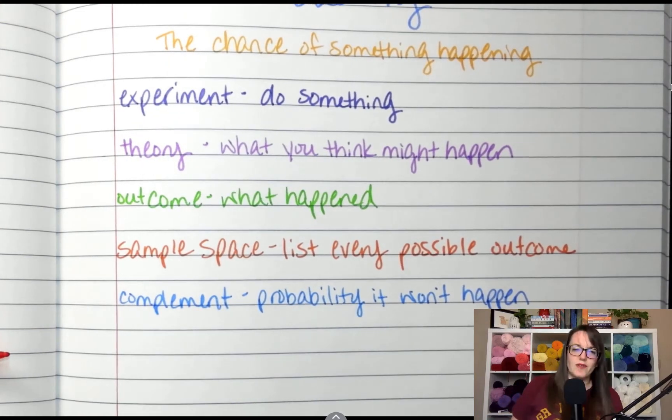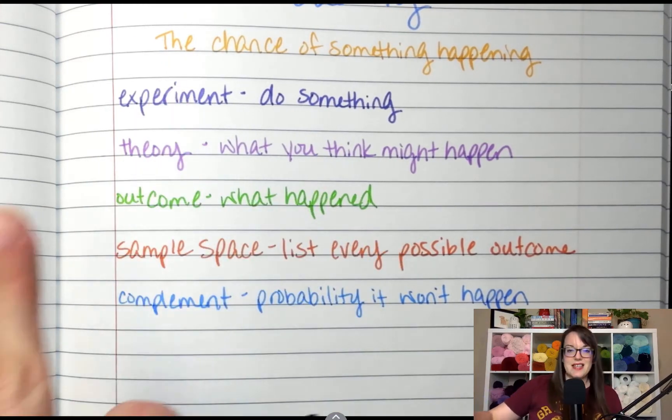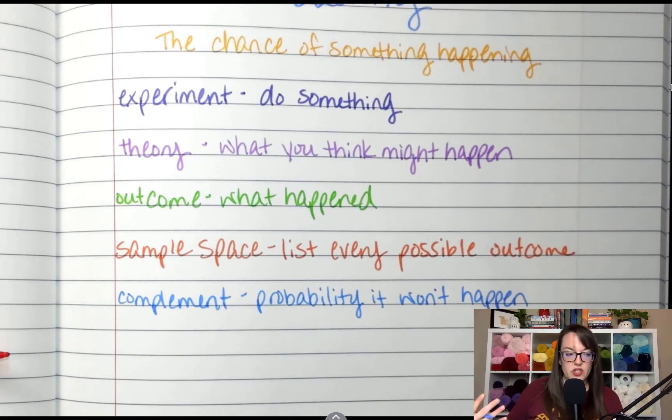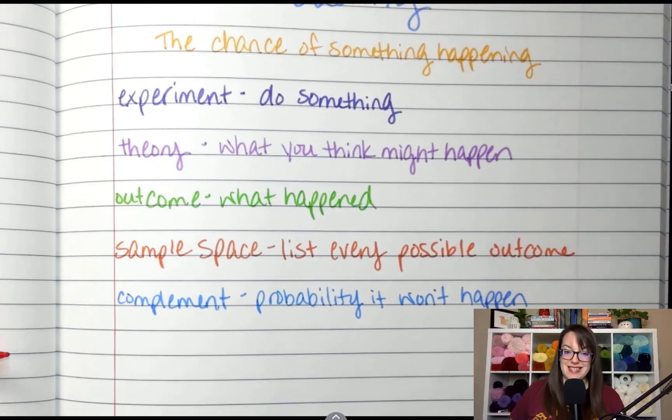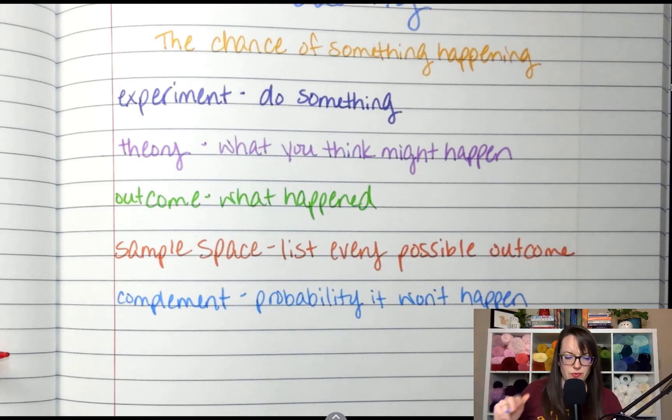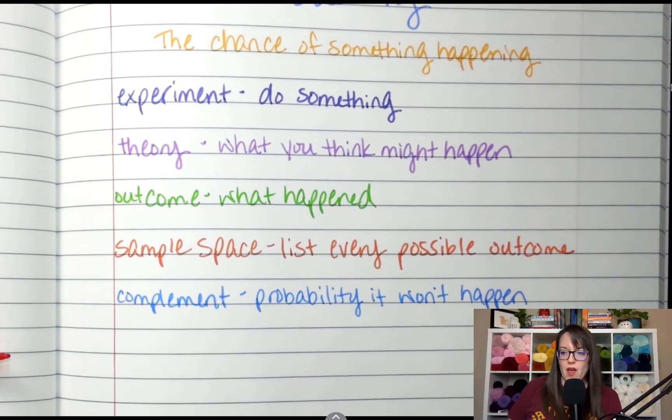Now that might get a little confusing because it's the opposite of whatever you're shooting for. So if we're trying to figure out like, what are the chances that I'm going to get a face card in a deck of cards? The complement is not face cards. But if the question asks, what's the probability of not getting face cards? Then the complement is the face card. So just read carefully. It might get confusing.